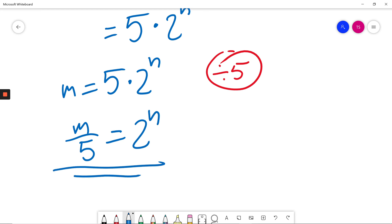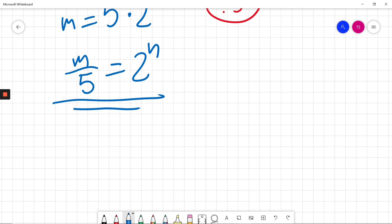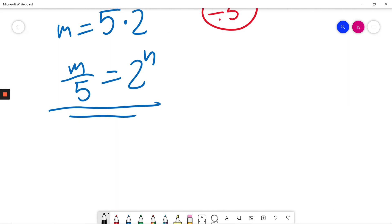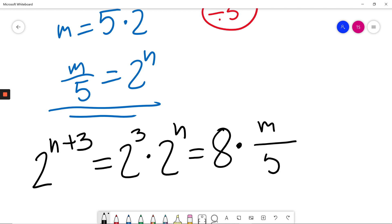I will use it in the next step. So I needed to calculate 2 to the power of n plus 3. I know this equals 2 cubed times 2 to the power of n. 2 cubed, 2 times 2 times 2 is 8. And 2 to the power of n, I found it before, is m divided by 5.